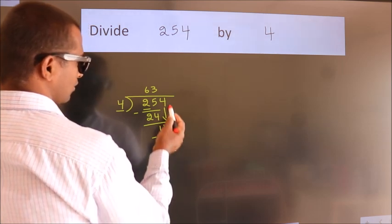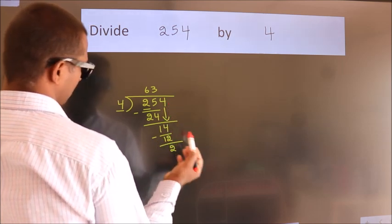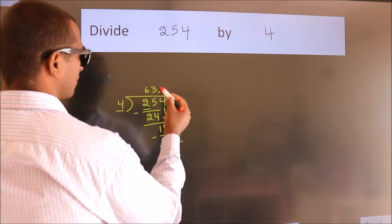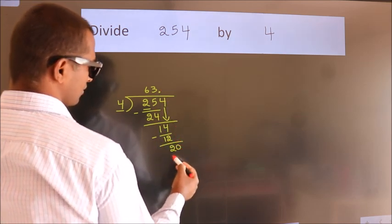After this no more numbers to bring down. So what we do is we put dot, take 0. So 20.